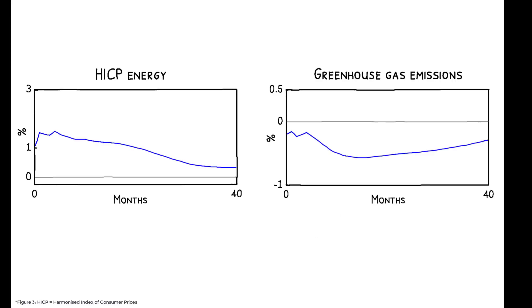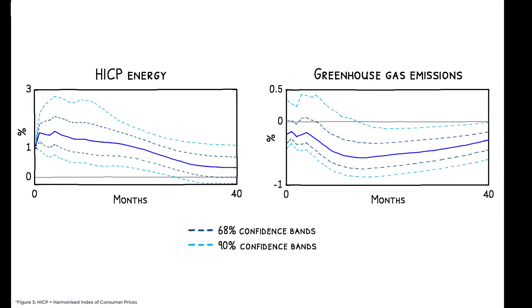These figures use impulse response plots to show how energy prices and emissions evolve over a horizon of 40 months following a carbon policy shock at month zero that increases carbon prices. There is a strong immediate increase in energy prices and a significant persistent fall in emissions.